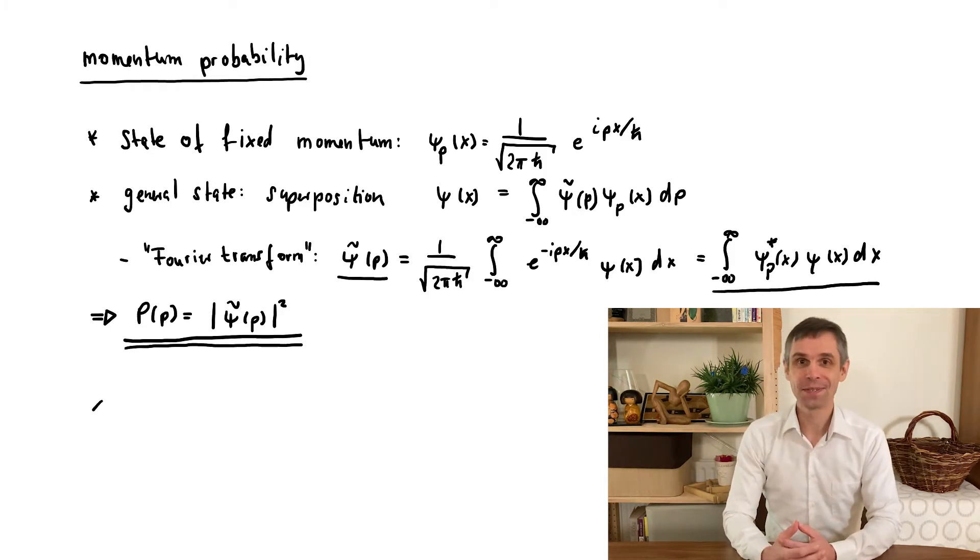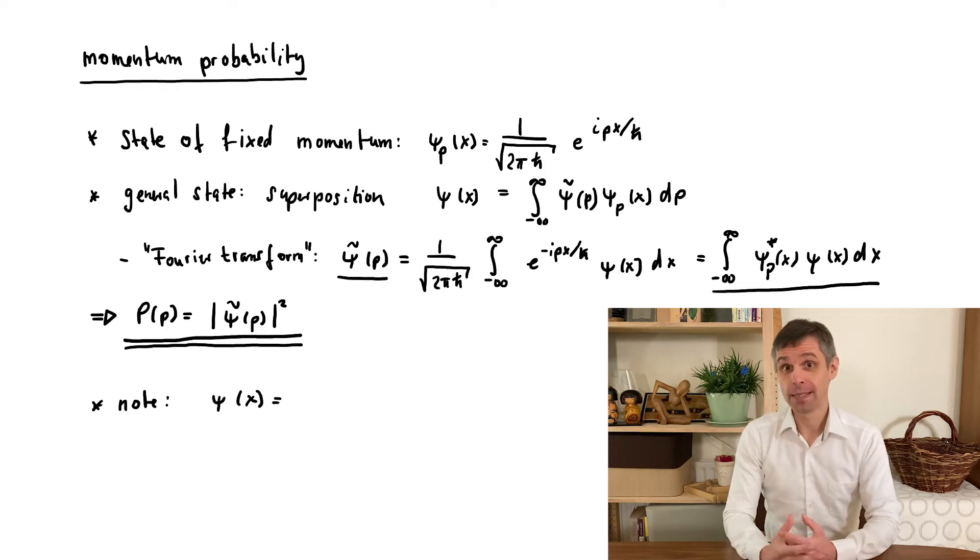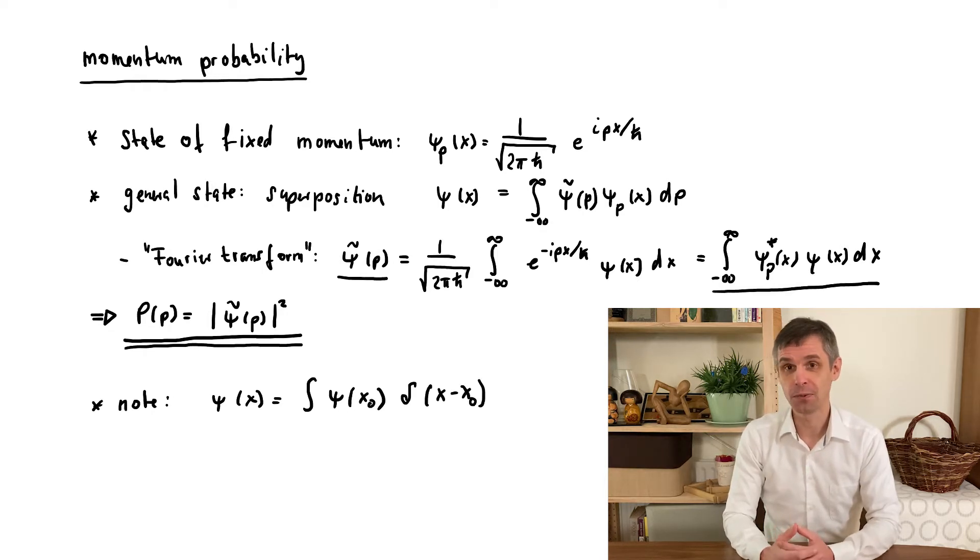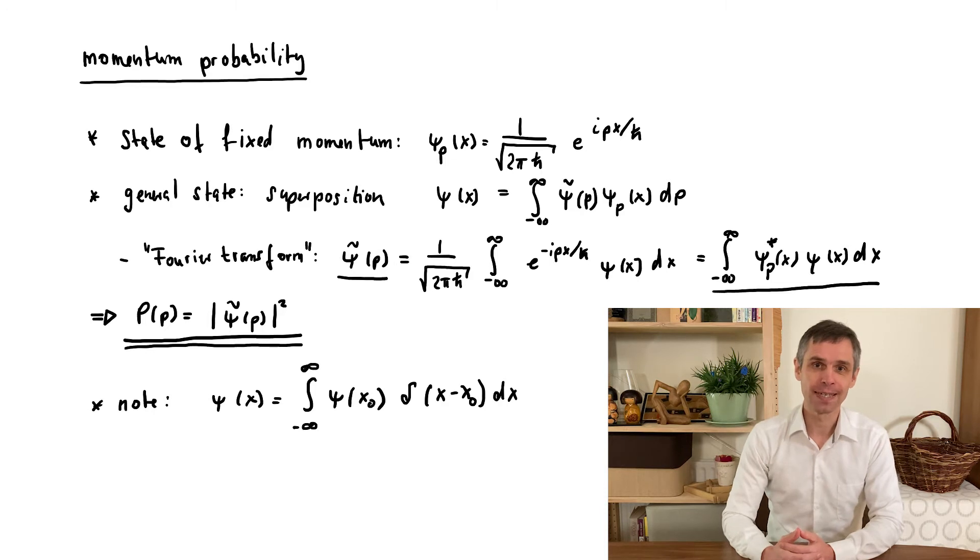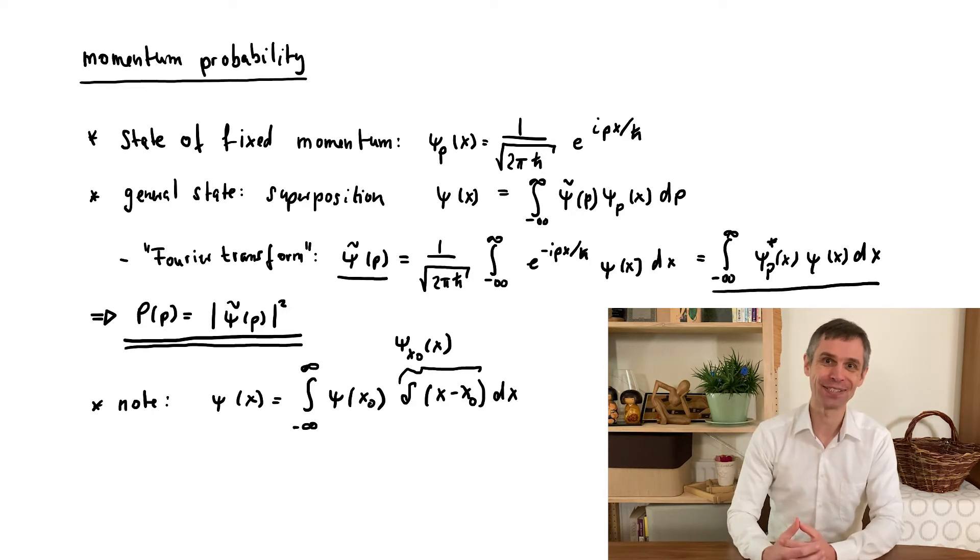While the probability density in position was obtained by the intensity of the wave in space, we do the same here but in terms of the intensities of these plane waves. As a matter of fact, we can deepen this analogy further. Note that even though it may look a bit artificial, we can rewrite the normal position wave function as the sum of all the position eigenstates or as an integral—these are just the delta functions.